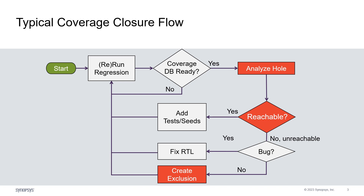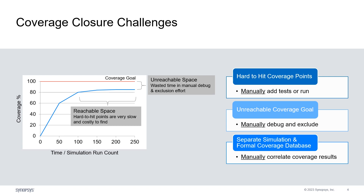Because of all the manual effort involved, the process is time-consuming and error-prone. Since coverage closure usually happens later in the project cycle, taking weeks or months to go through these iterations often causes project delay. Direct and constrained random simulation can often reach 80% of the coverage goals in a reasonable amount of time. The remaining 20% uncovered items are either unreachable or hard to hit, and manual effort to review and debug this becomes the bottleneck.